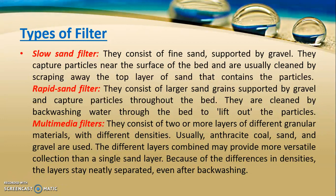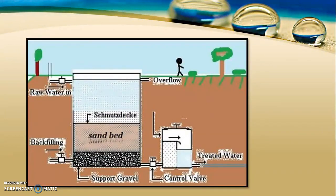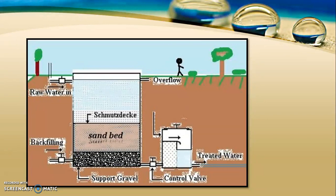The slow sand filter and rapid sand filter are the most important types. The type used in water treatment plants is the rapid sand filter. The slow sand filter consists of gravel and sand, and has a slime layer formed by bacteria over the sand, which helps in oxidizing organic matter present in the water. The basic difference between the two filters is the size of the sand grains and gravel: slow sand filters have finer sand and gravel, resulting in larger removal of impurities and bacteria. In comparison of efficiency, slow sand filters are much more efficient than rapid sand filters.